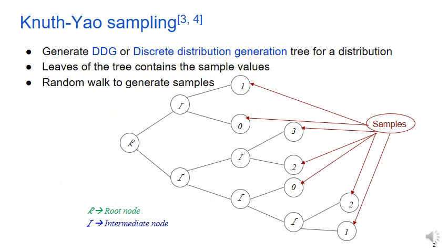A popular choice for sampling from discrete Gaussians is Knuth-Yao sampling. It first creates a discrete distribution generation tree using the probabilities of different values in the distribution. The sample values are placed in the leaves of the tree. To generate a sample, a random walk is performed from root to the leaves of the tree.